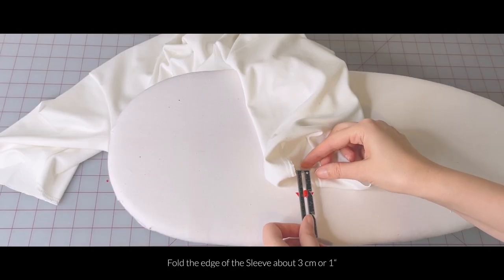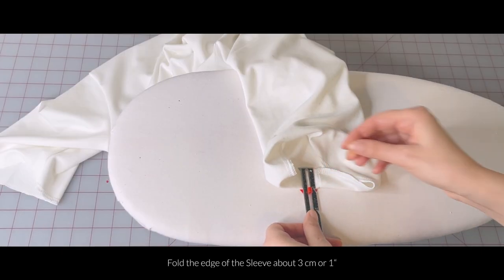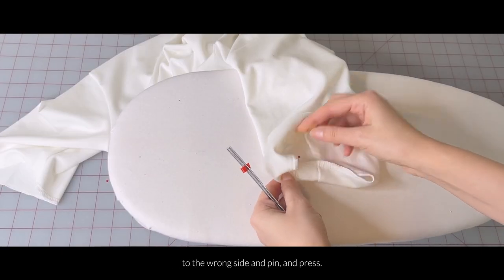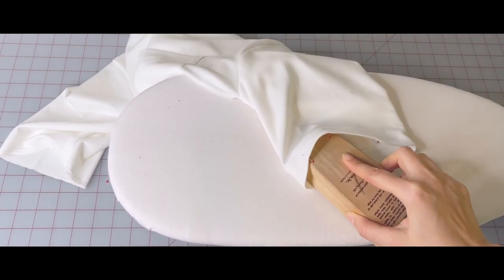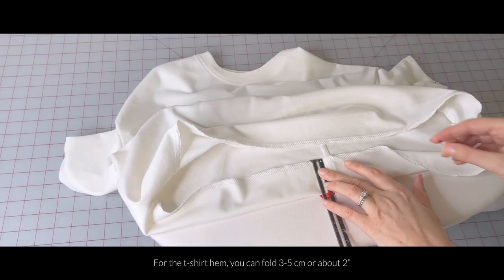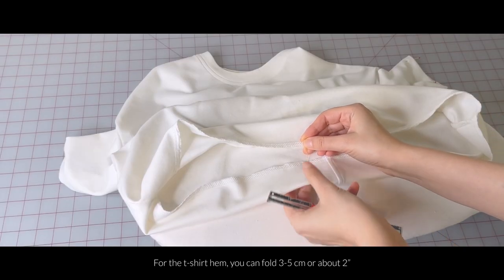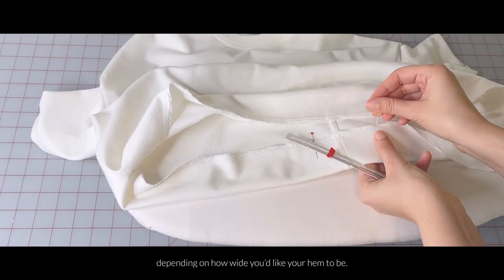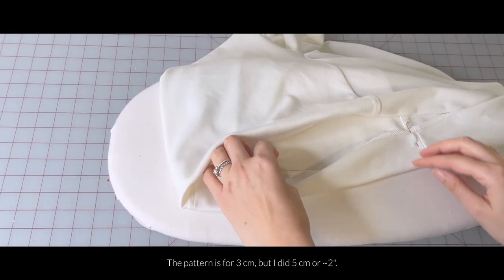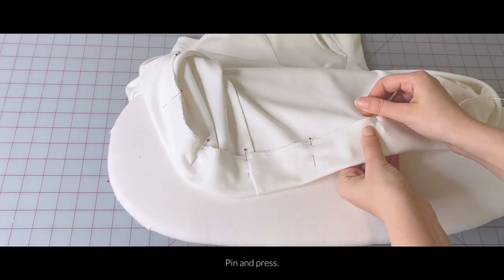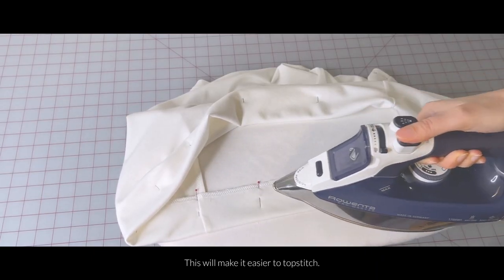And now for the hem. Fold the edge of your sleeve about 3cm or 1 inch to the wrong side, pin, and press. For the t-shirt hem, you can fold 3-5cm or about 2 inches depending on how wide you'd like your hem to be. The pattern is for 3cm, but I folded 5cm or around 2 inches. Pin and press. This will make it easier for us to topstitch.